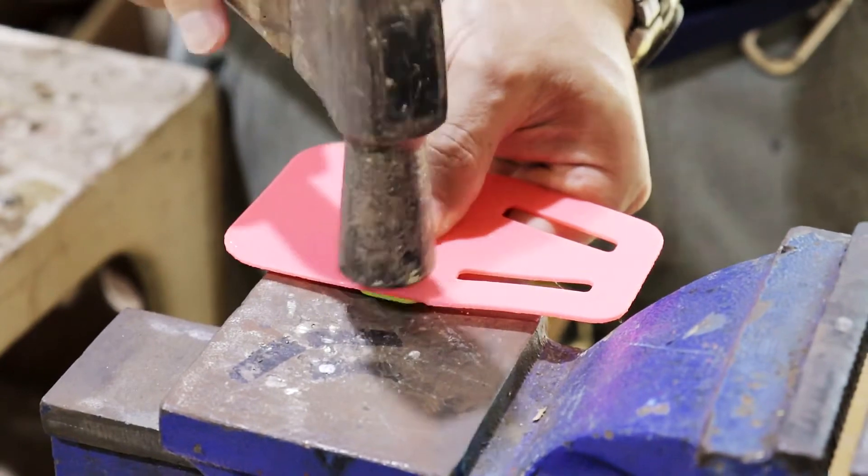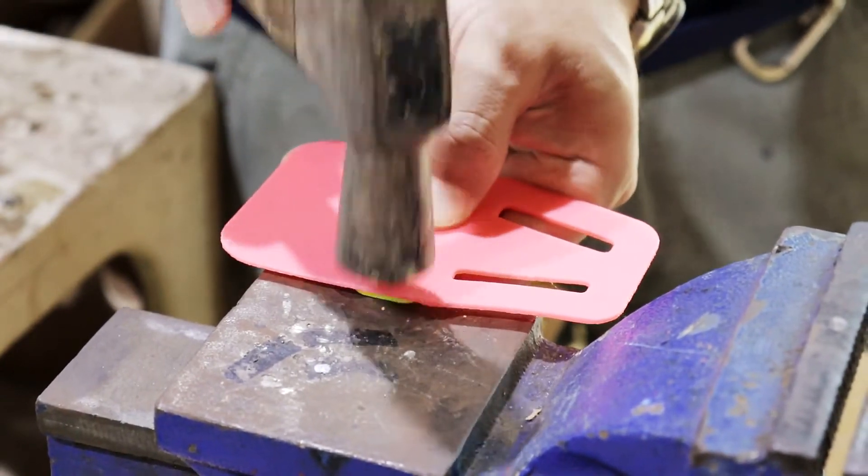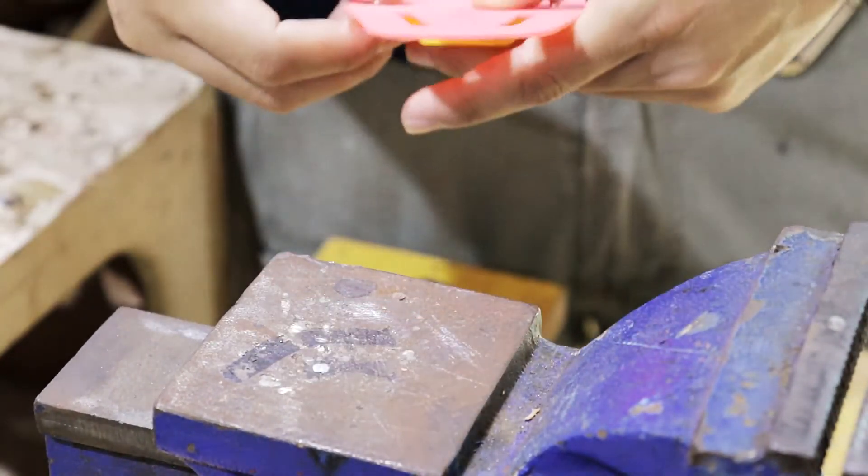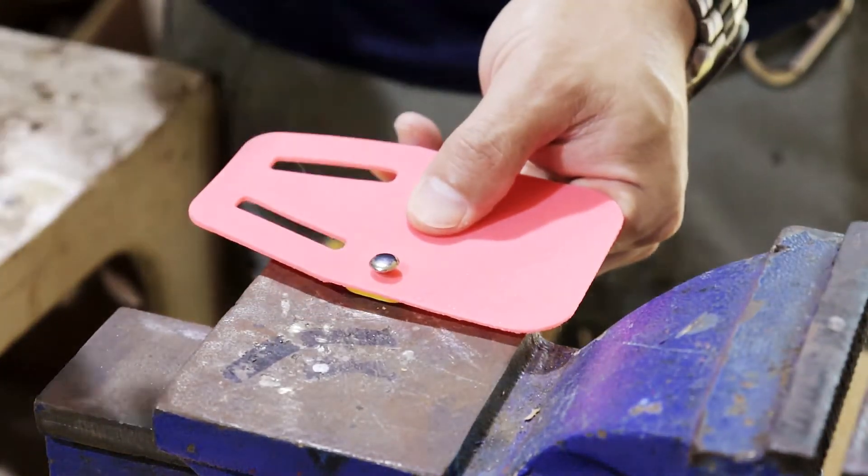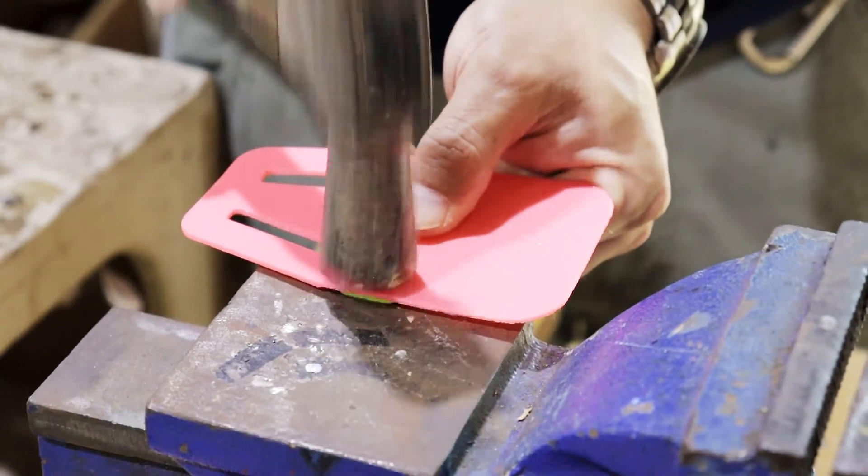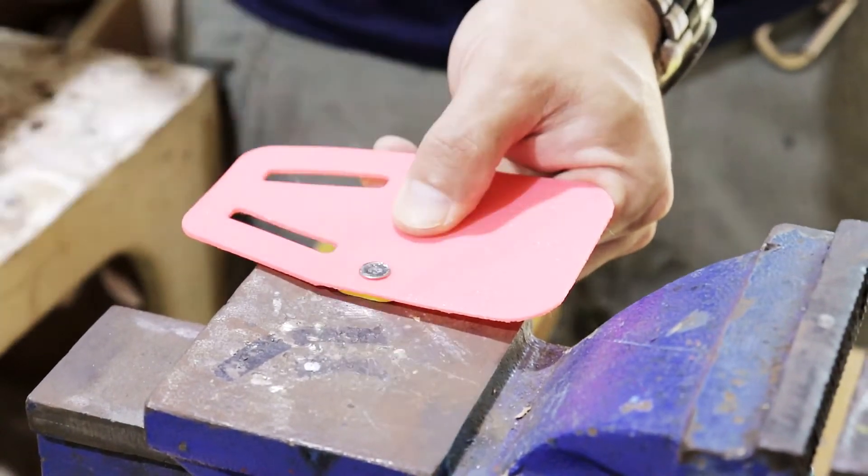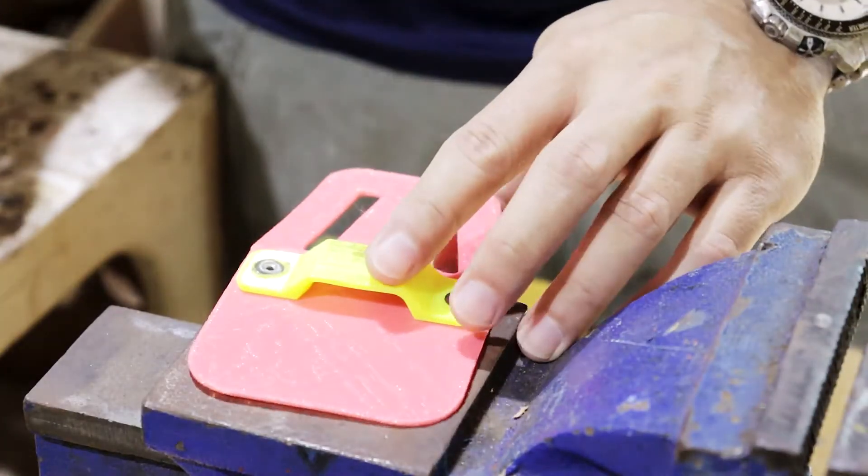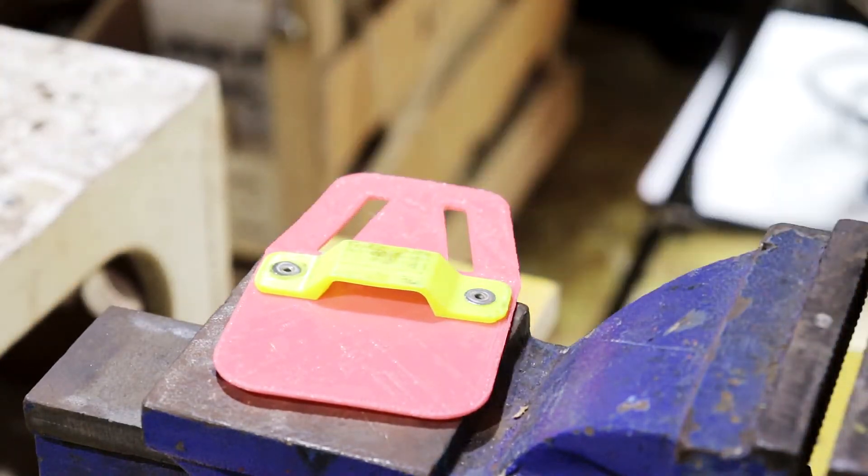3D printed parts are strong at a certain orientation of how they are printed. I printed these separately so that I can orient each one to their correct orientation. Instead of using Mighty Band to connect the two, I used rivet so that there will be no weak connections.